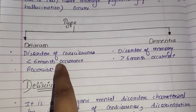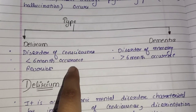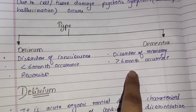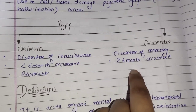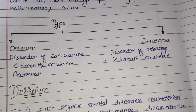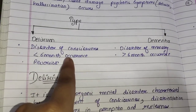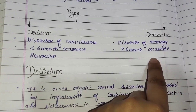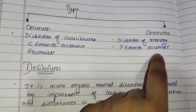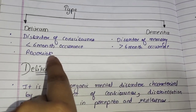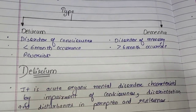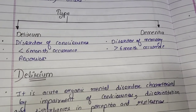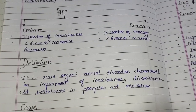Delirium lasts less than 6 months, and dementia lasts more than 6 months. So delirium is a short-term condition, and dementia is a long-term condition. Delirium is a reversible process, meaning it can be treated easily.